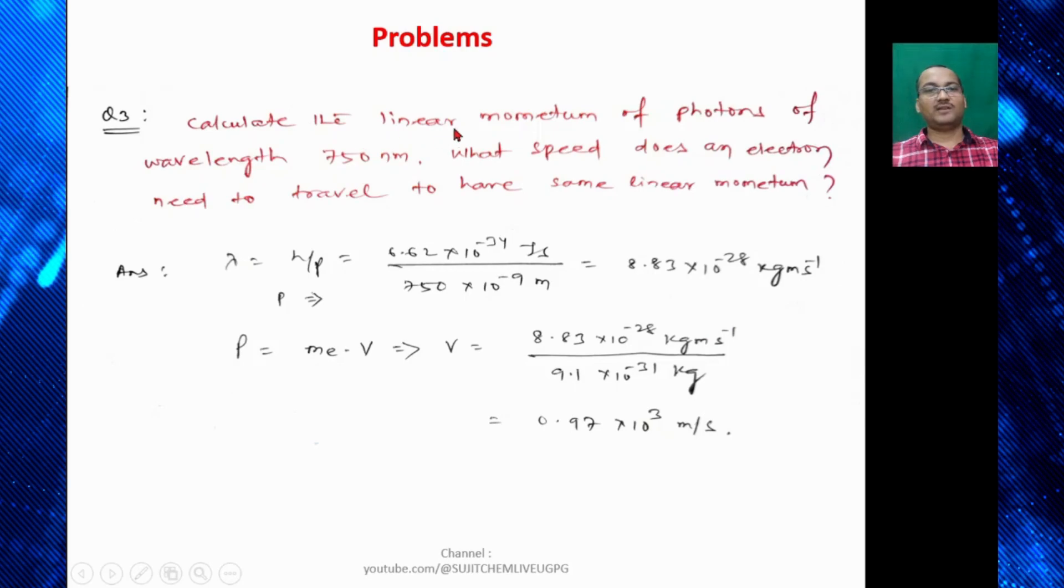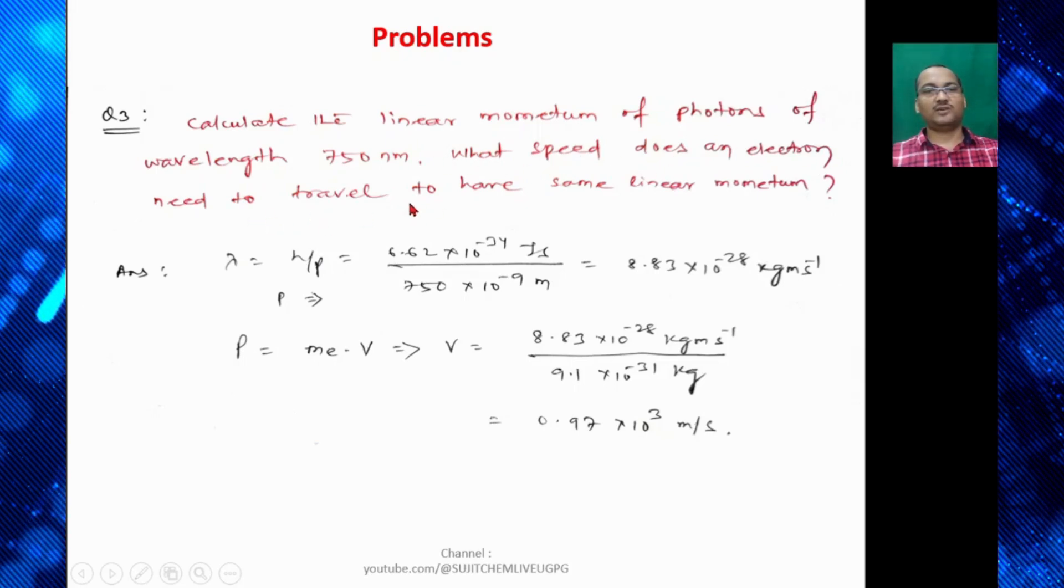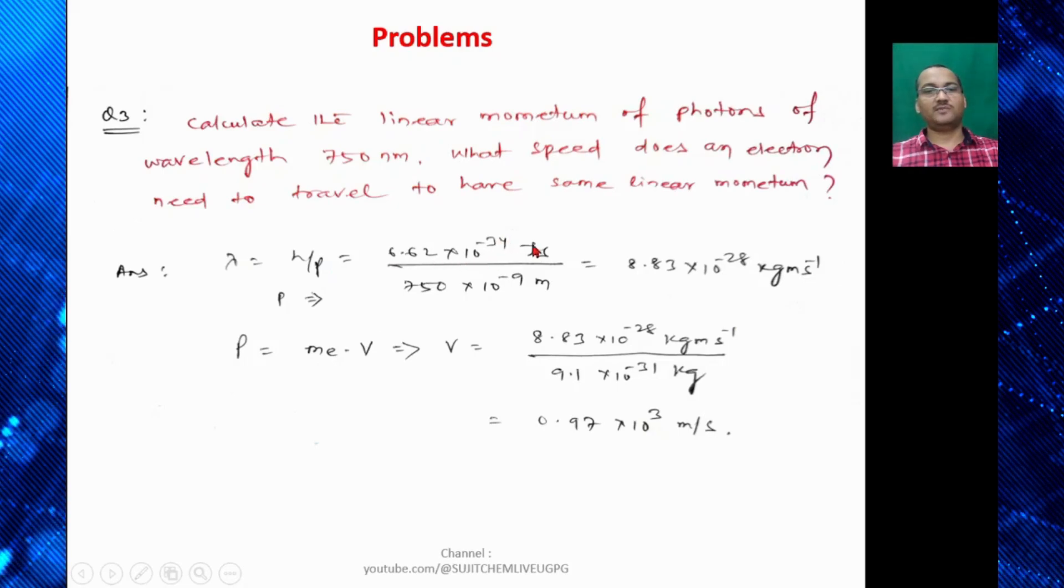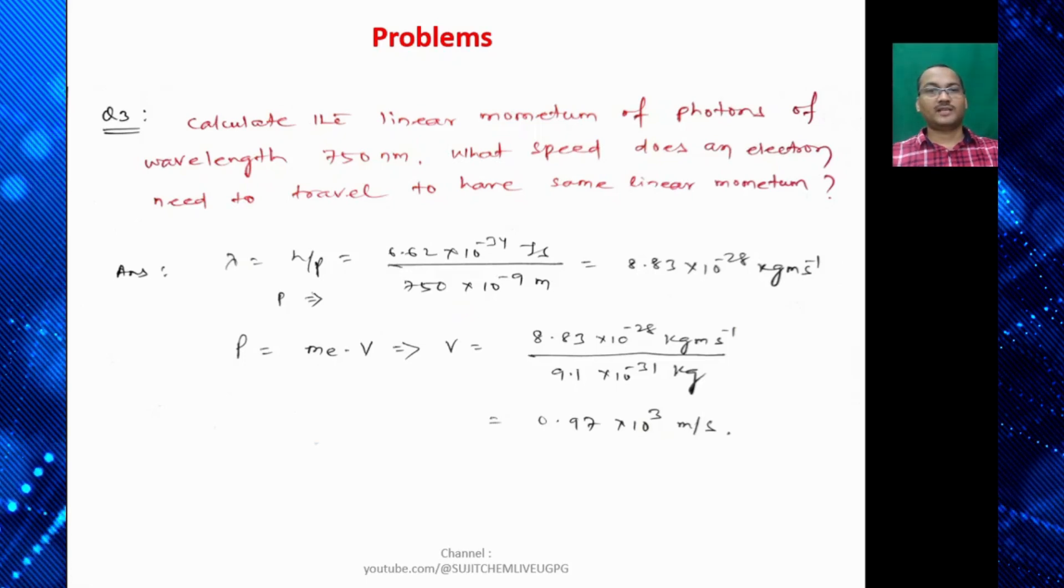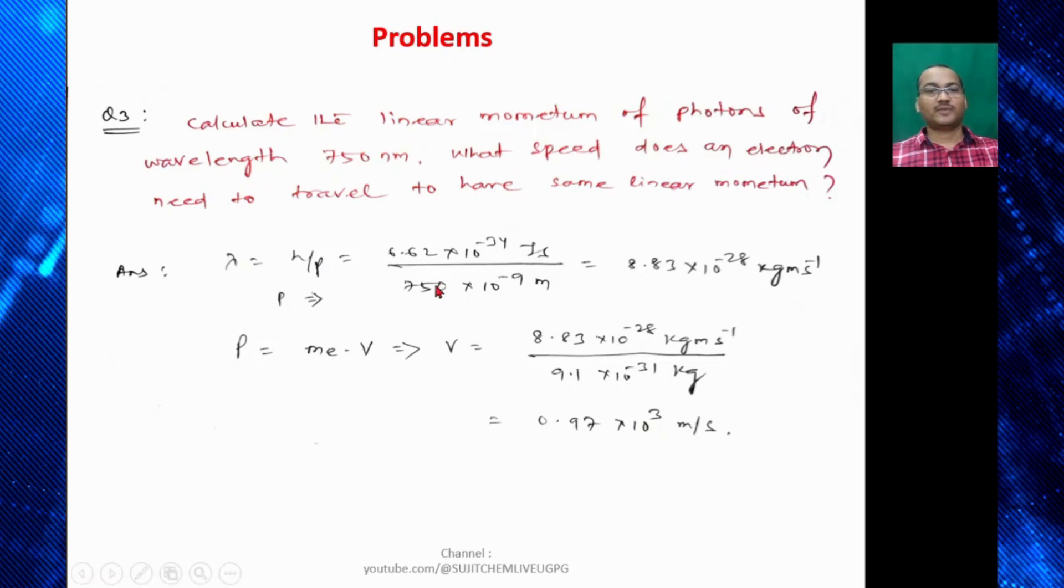Similarly another problem. Calculate the linear momentum of photon of wavelength 750 nanometer. What speed does an electron need to travel to have same linear momentum? So we know λ = h/P so that is 6.62×10⁻³⁴ joule second divided by P that is linear momentum and that is equal to 750×10⁻⁹ meter.